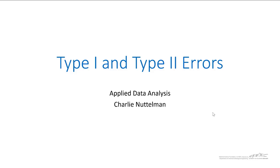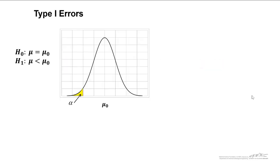You've already learned about type 1 errors. In this screencast I'm going to explain what a type 2 error is. Let's revisit what a type 1 error is. Here we have a null hypothesis and an alternate hypothesis. This is a lower tailed alternate hypothesis.